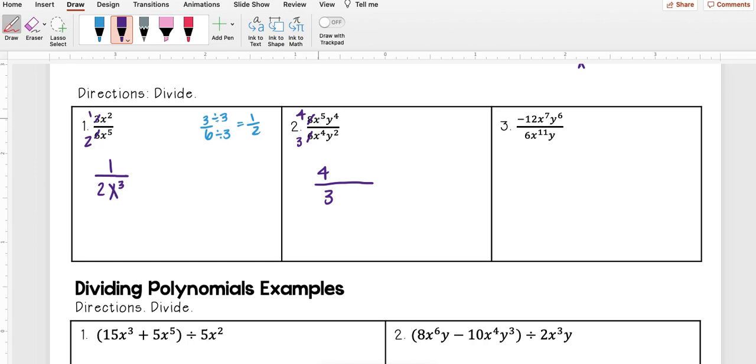Next I'm going to look at my x's. So I have x to the fifth divided by x to the fourth. Well 5 minus 4 I get 1. My bigger exponent was on top so my base is going to stay on top.